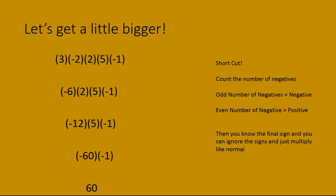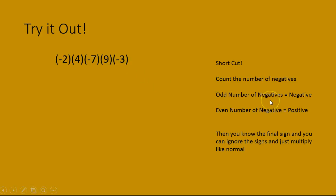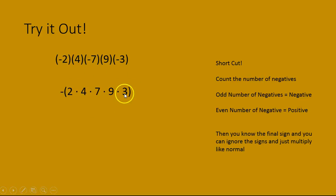Go ahead and try this: negative 2 times 4 times negative 7 times 9 times negative 3. Count the negatives: 1, 2, 3. There are 3 negatives, so the final answer is going to be negative — it's an odd number of negatives. So put the negative on the outside, then just multiply 2 times 4 times 7 times 9 times 3, ignoring the signs. That gives 1,512, so the answer is negative 1,512. You don't have to change the sign back and forth every step — just know the sign upfront and multiply like normal.